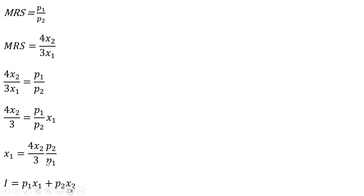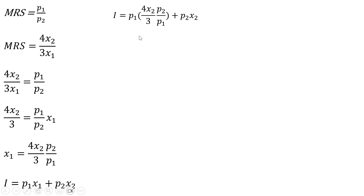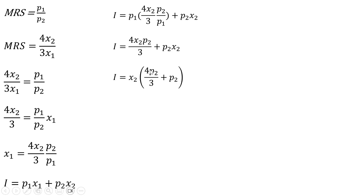Next, we'll recall the budget constraint: the consumer's income equals spending on Good 1 plus spending on Good 2. Where we have Good 1 in the budget constraint, we replace it with our result for x subscript 1. After making that substitution, the Price of Good 1 terms cancel, and we're left with a simplified expression. We then factor out x subscript 2 on the right-hand side.